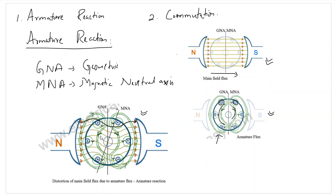We can see the distorted waveforms of the main flux lines originating from the north pole and terminating at the south pole. Because of this armature reaction, the magnetic neutral axis gets shifted from the geometrical neutral axis — they are no longer aligned in the same direction.